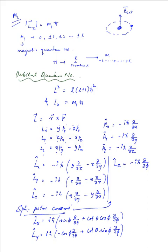The square of the magnitude of the angular momentum vector, L², equals Lx² + Ly² + Lz², and so the corresponding operator L² equals Lx² + Ly² + Lz² (operator squared terms). We substitute the values of Lx, Ly, Lz into these equations and use them in the operator equation to get the L² operator expression.